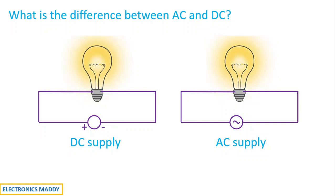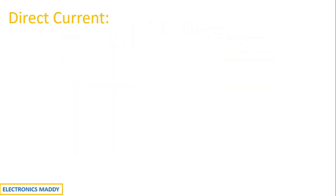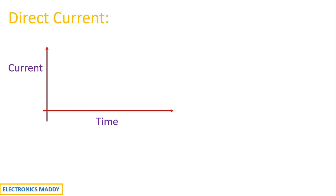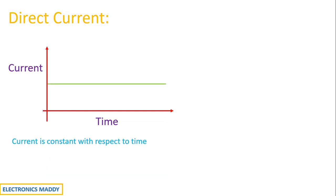Let us go step by step. What is direct current? If a current is continuously constant with respect to time throughout the time duration, then we refer to such a current as direct current. How does the process internally take place in order to light the lighting load?